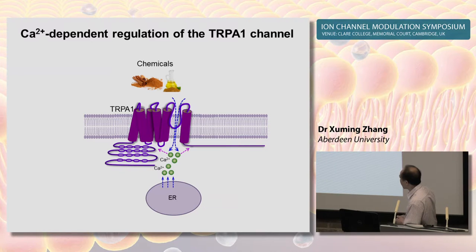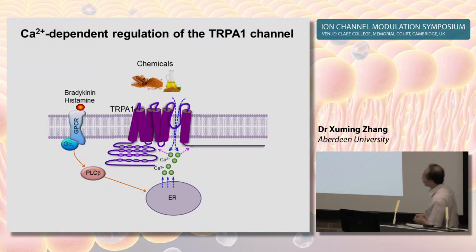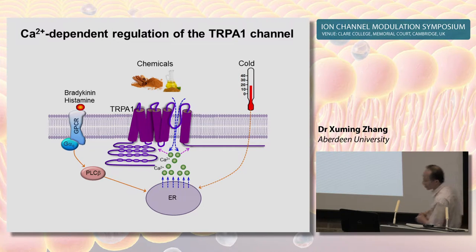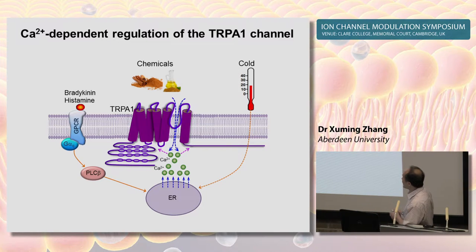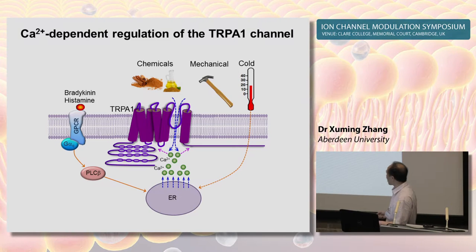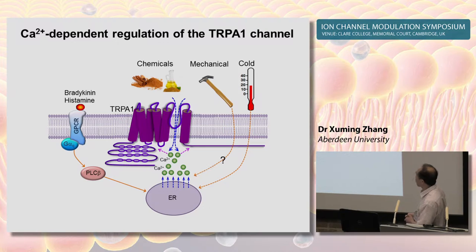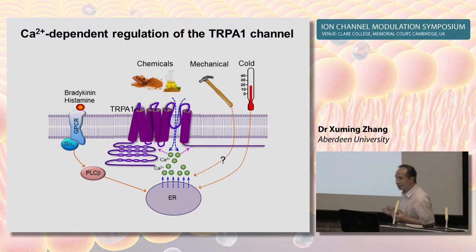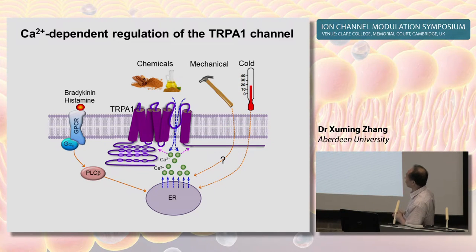Increased intracellular calcium can also arise from calcium release from the ER store due to either activation of PLC-coupled G-protein-coupled receptors by inflammatory agents such as bradykinin and histamine, or due to indirect effects of cold. Cold-independent activation of this channel has therefore been proposed as a very important mechanism enabling this channel to sense inflammatory agents and cold stimuli. Additionally, calcium has a dramatic effect on TRPA1 responses evoked by mechanical stimuli, though it is not yet known whether TRPA1-mediated mechanical responses are mediated by calcium changes.